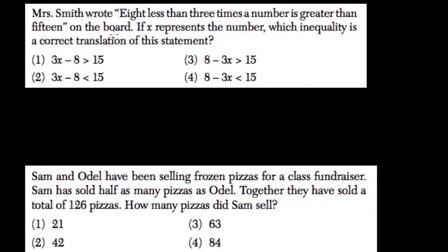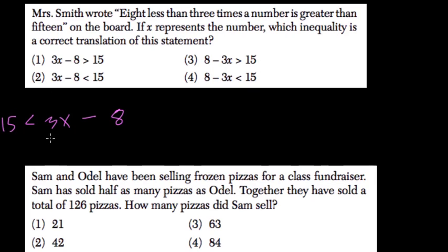When Mrs. Smith wrote '8 less than 3 times a number,' that means 8 subtracted from 3x, which is greater than 15. This can be written as 3x minus 8 is greater than 15. It's also equivalent, and there it is — choice number 1.